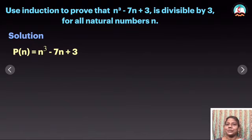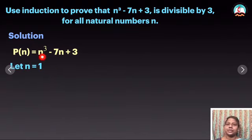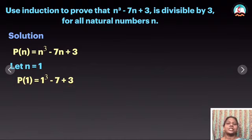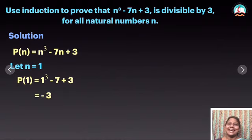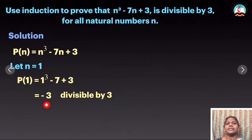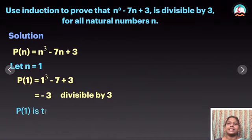I have to check for n equal to 1. Substituting n=1, there is no LHS/RHS here — just the equation. I substitute and get the result equal to 3, then -3. Is that divisible by 3? Yes, it comes in the 3 times table. Which is divisible by 3. So P(1) is true because n³ - 7n + 3 is divisible by 3 — substituting n=1 gives a result that is divisible. Therefore that is true.